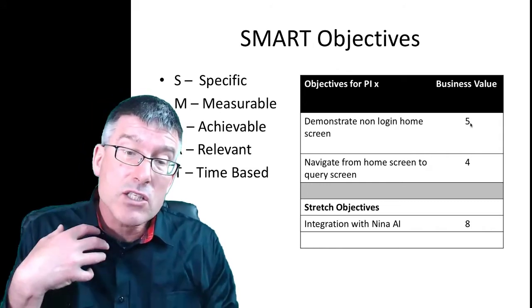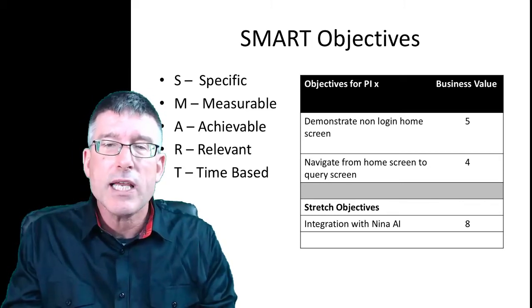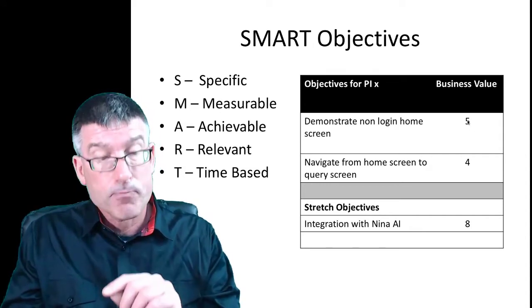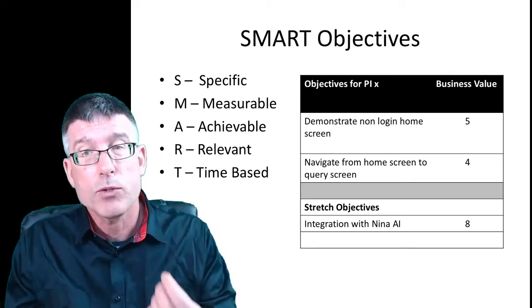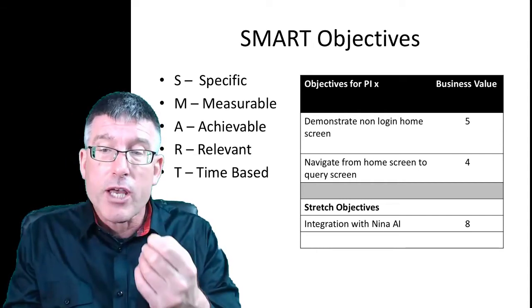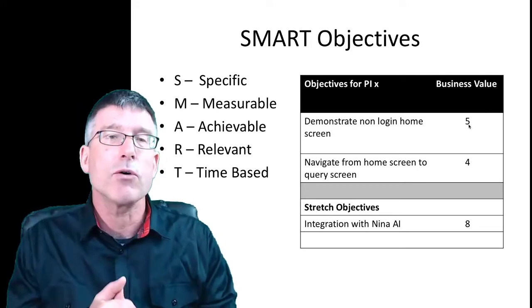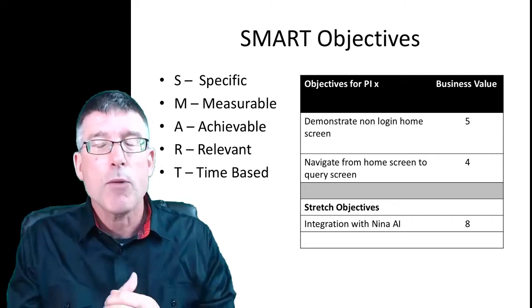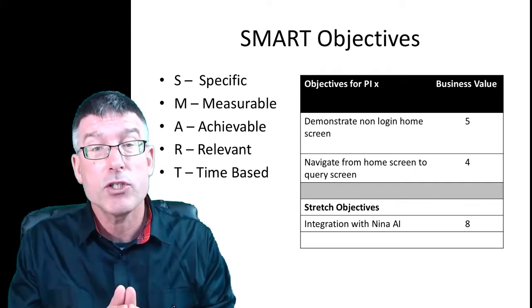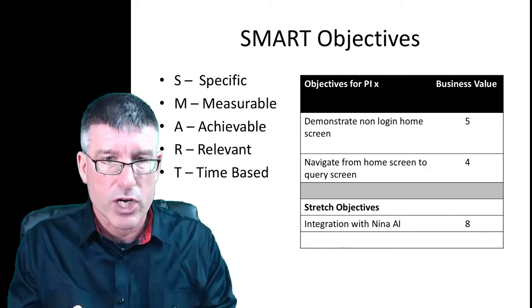In the Scaled Agile Framework, objectives are given a business value of 1 to 10 — the relative value of this objective to the organization. It's challenging to always put a value on something, but we're asking the product owners and business owners to say: this is what the value of reaching this objective is. We want to understand how much value each PI is delivering and what objectives carry that value. If you're a business owner or product owner, you should be prepared to assess the business value of the objectives being developed.